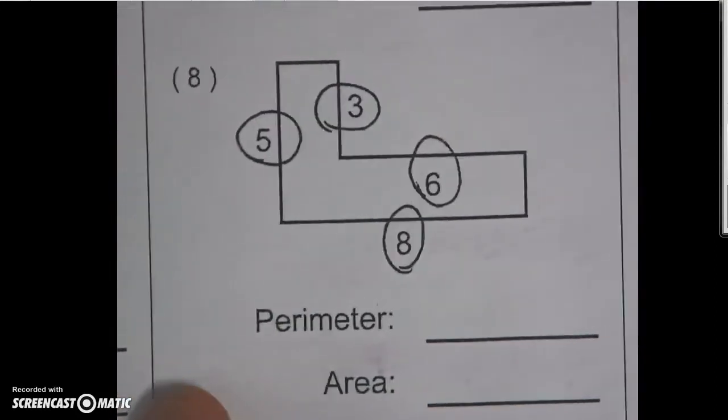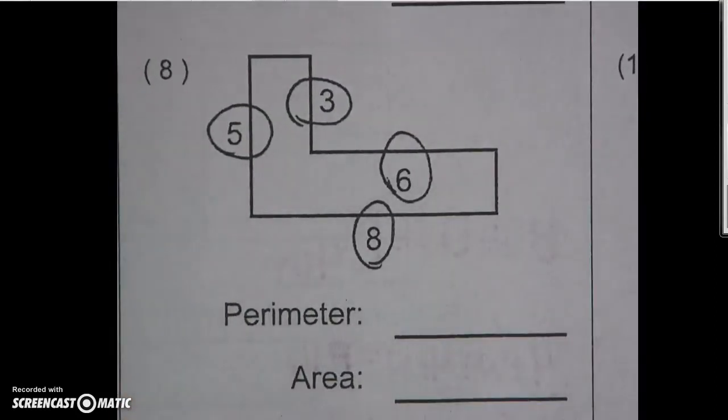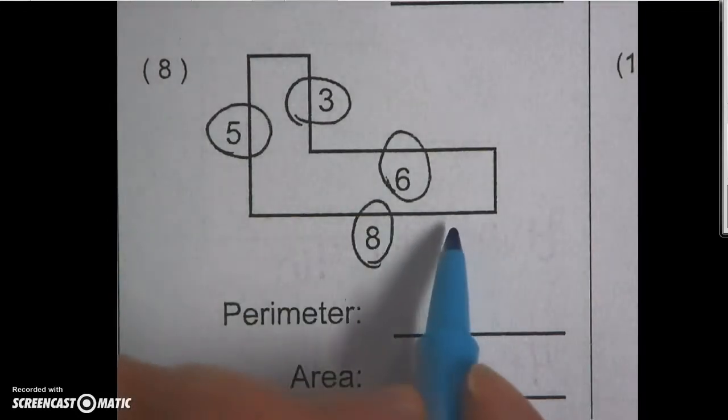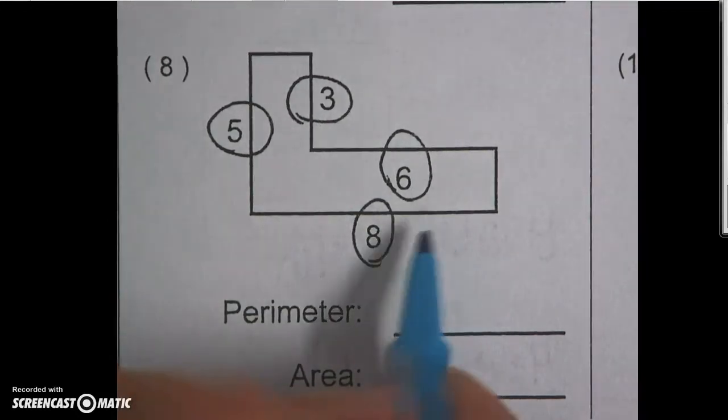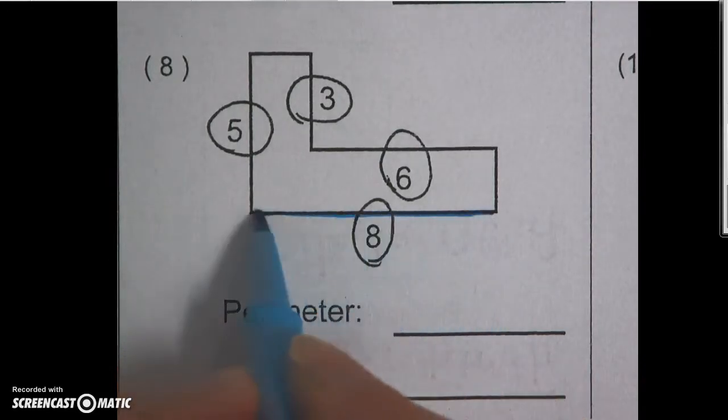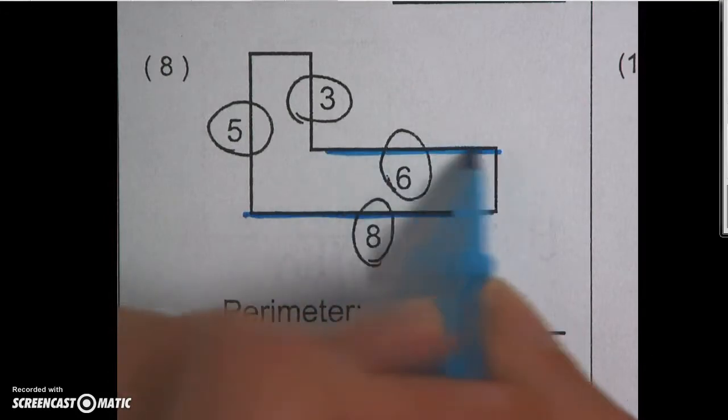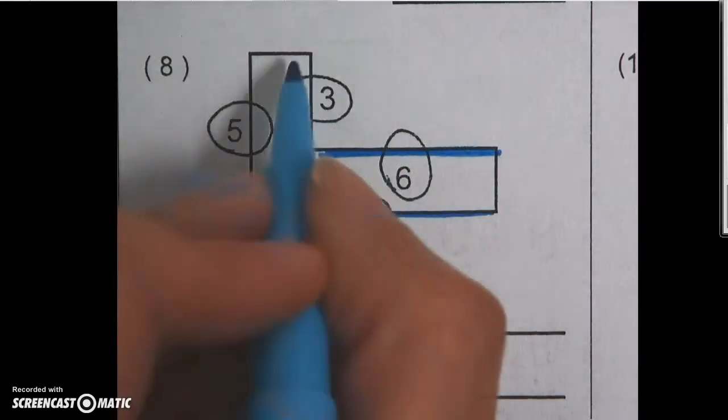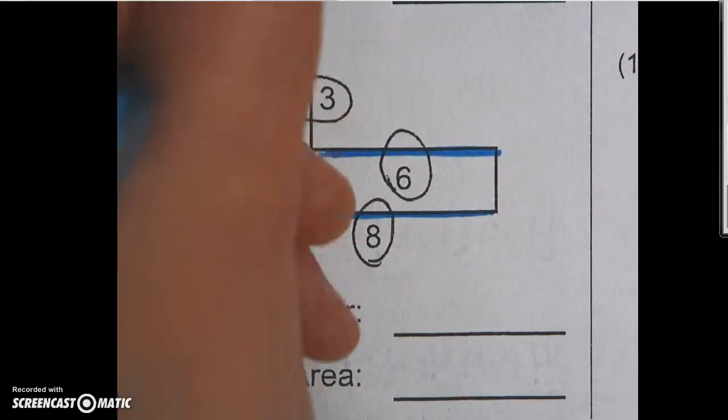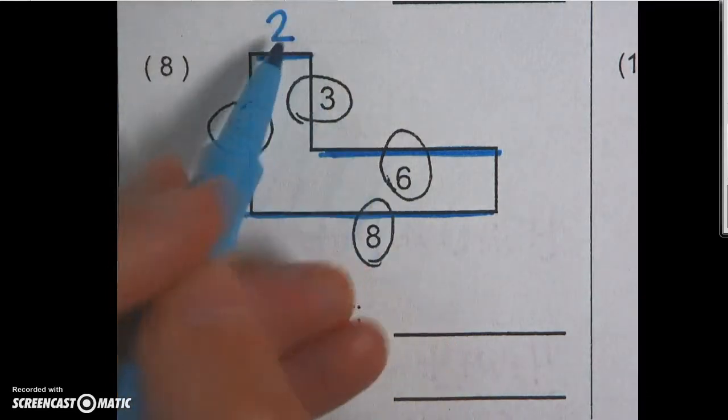I'm going to show you one more real quick. So I need to start by finding my missing sides. I will start with my width. My width is 8. And this piece of my width right here is 6. So I know that this chunk needs to be 2, because 6 plus 2 gives me 8.